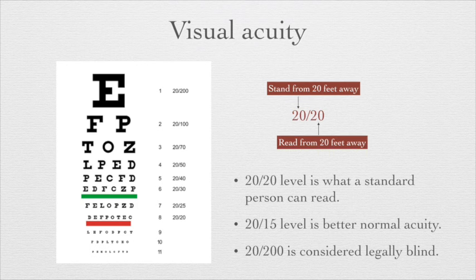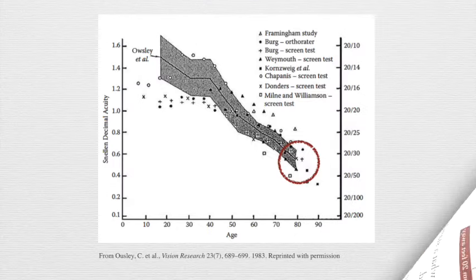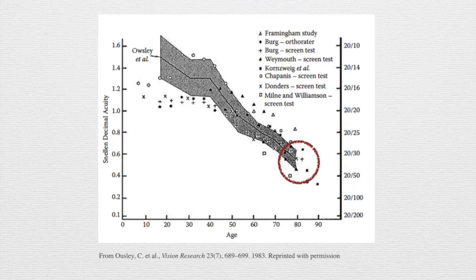A person whose best optically corrected acuity is worse than 20/200 is considered legally blind in the United States. This picture shows mean visual acuity as a function of age on its x-axis. The plot combines the results of many different studies and shows that with increasing age, there is a steady decline in visual acuity for most people.